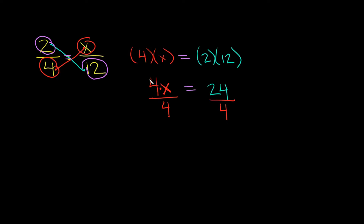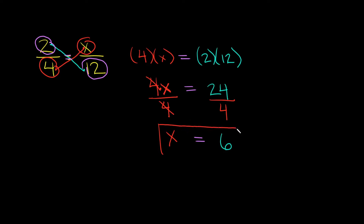Whatever you do to one side of an equation you have to do to the other, so if we divide by 4 here we also divide by 4 on the other side. The 4s cancel out on the left, leaving just x. That's equal to 24 over 4, and 24 divided by 4 is 6. So x is equal to 6.